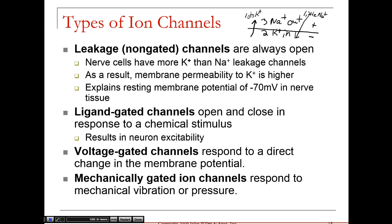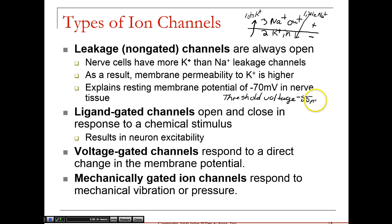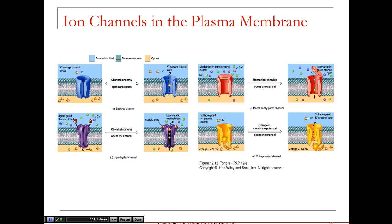Voltage-gated channels respond to a change in the membrane voltage. If our resting membrane potential is negative 70 millivolts, there will be a threshold voltage. If the membrane voltage moves from negative 70 millivolts to that threshold — in most neurons this is going to be negative 55 millivolts — voltage-gated ion channels will open up. These are usually found in the axons.